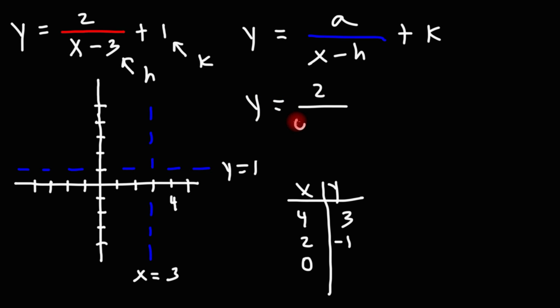Now let's get the y intercept. Let's replace x with 0. And I forgot about the plus 1. So this is 2 over negative 3 plus 1. We can replace 1 with 3 over 3. 3 divided by 3 is 1. Negative 2 over 3 plus 3 over 3 is positive 1 third.